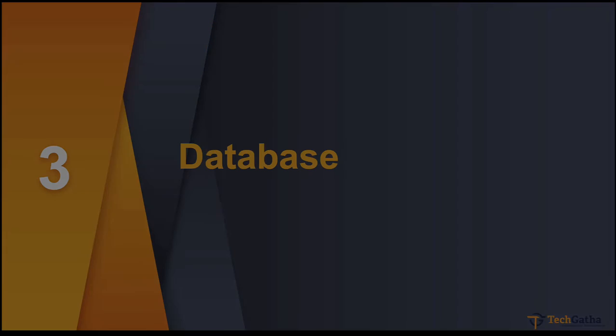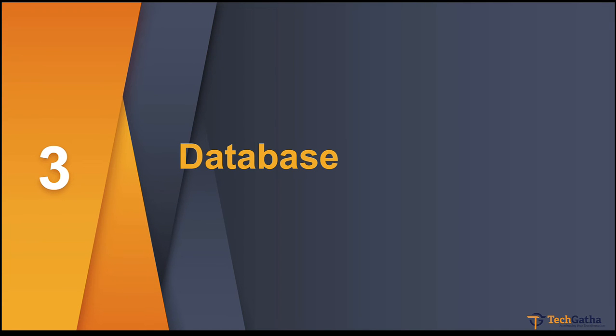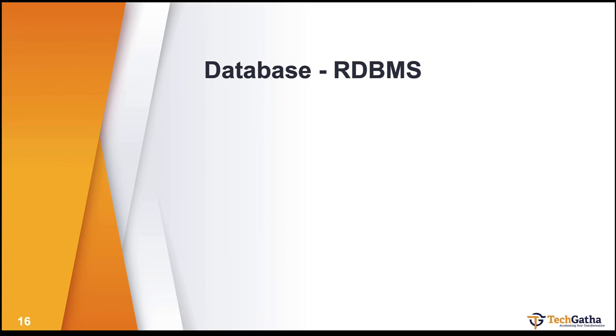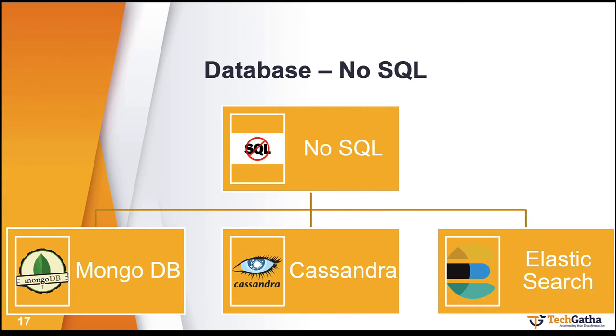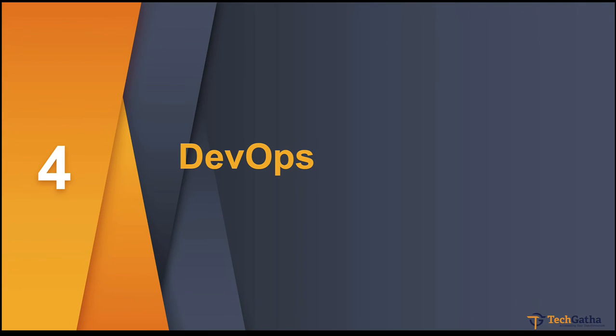Databases are divided into two categories: RDBMS — such as MySQL, PostgreSQL, Oracle, and Microsoft SQL Server — and NoSQL databases, which include Cassandra, Redis, MongoDB, and Elasticsearch.